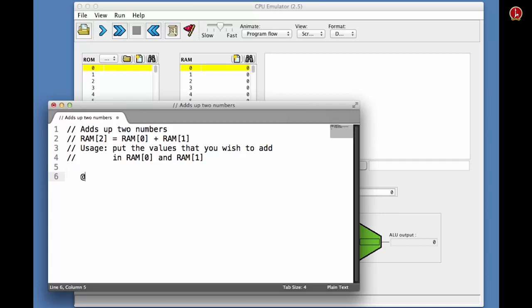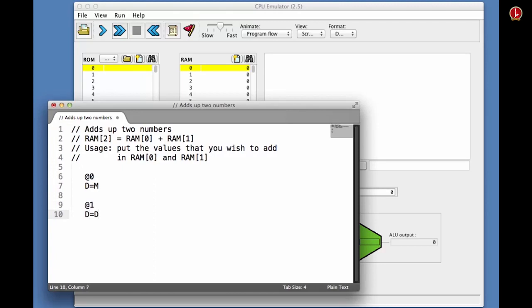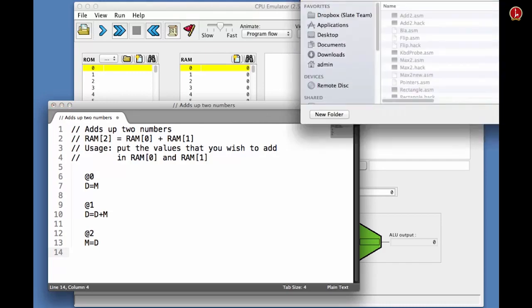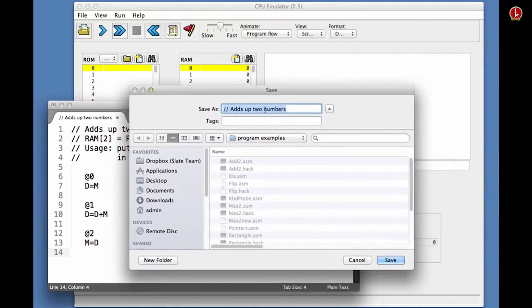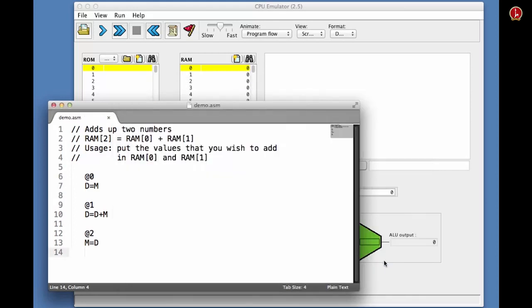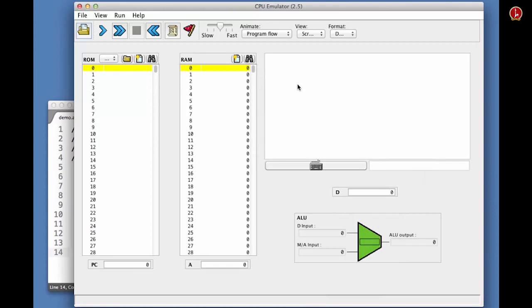All right, very nice. So let us begin to write the program. I use some indentation for purposes that will become clear in subsequent units. So I do at 0, D equals M, at 1, D equals D plus M. And now we can put the result in at 2, M equals D. And that's the end of the program. Let's save the program using something that you cannot see now because it's far away on the screen. So we want to save the program. We'll give it the most imaginative name, demo.asm. We save it, and now we can go back to the CPU emulator and load the program.